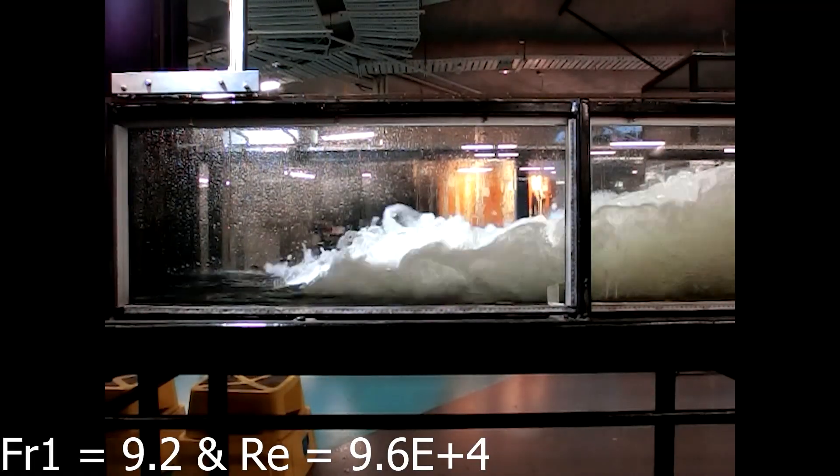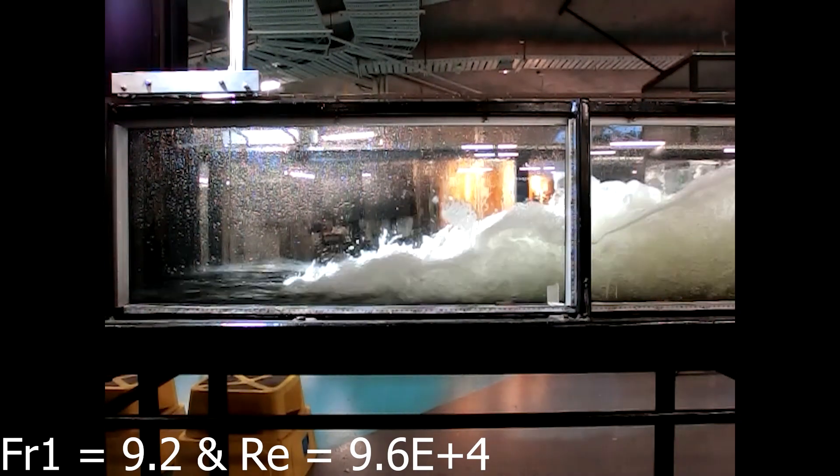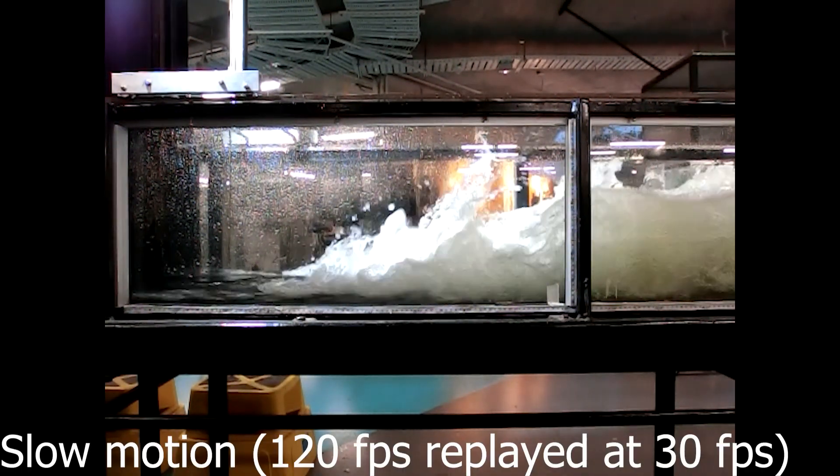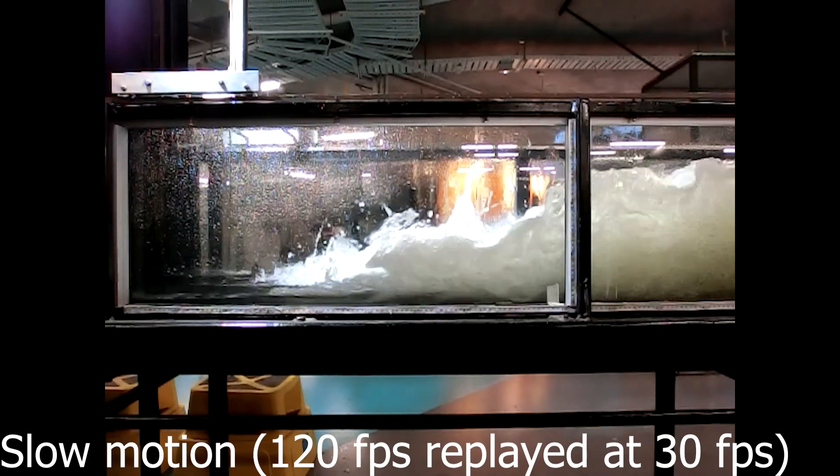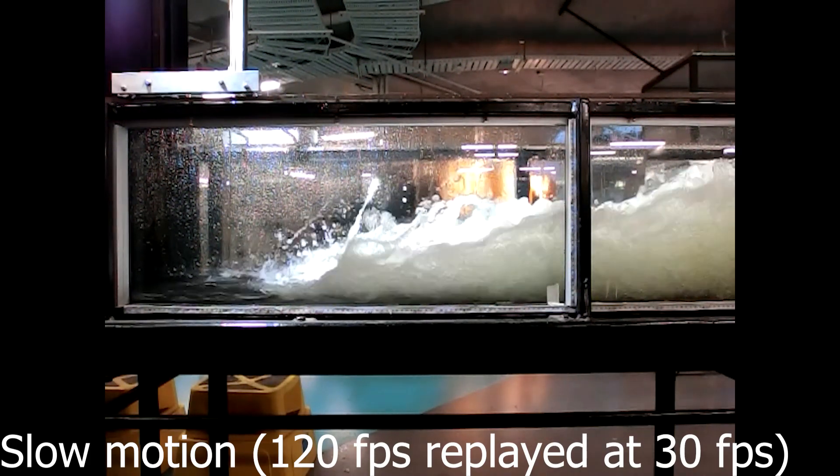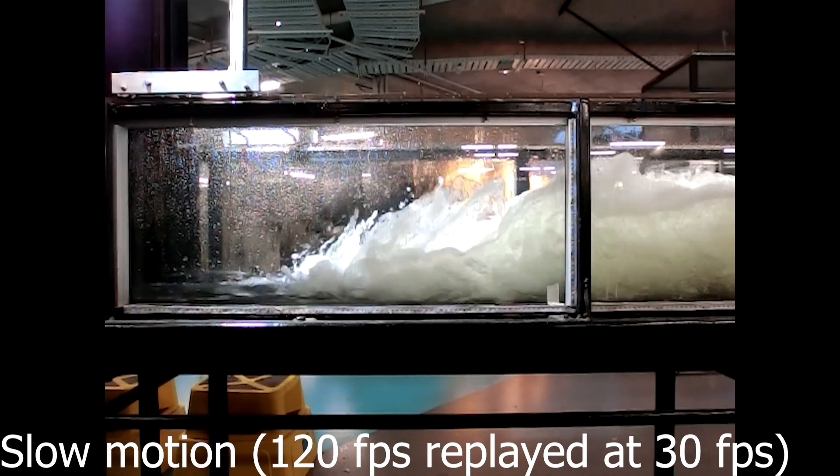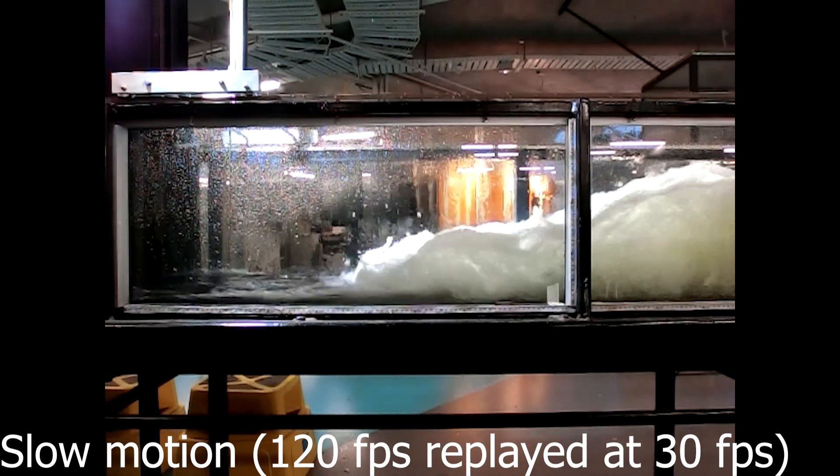The second longer movie shows again the hydraulic jump viewed from the right glass side wall. The slow motion was recorded at 120 frames per second and replayed at one-fourth of the normal speed.